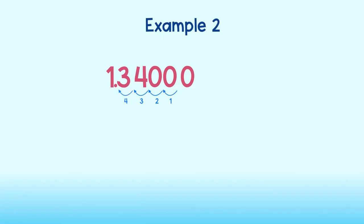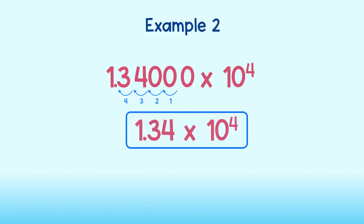Okay, now my number is 1 and 34 hundredths. Great. Since I moved four places to the left, that is the same as dividing that number by 10 four times. So I must make up for it and multiply by 10 four times. 13,400 written in scientific notation is 1.34 times 10 to the fourth power.